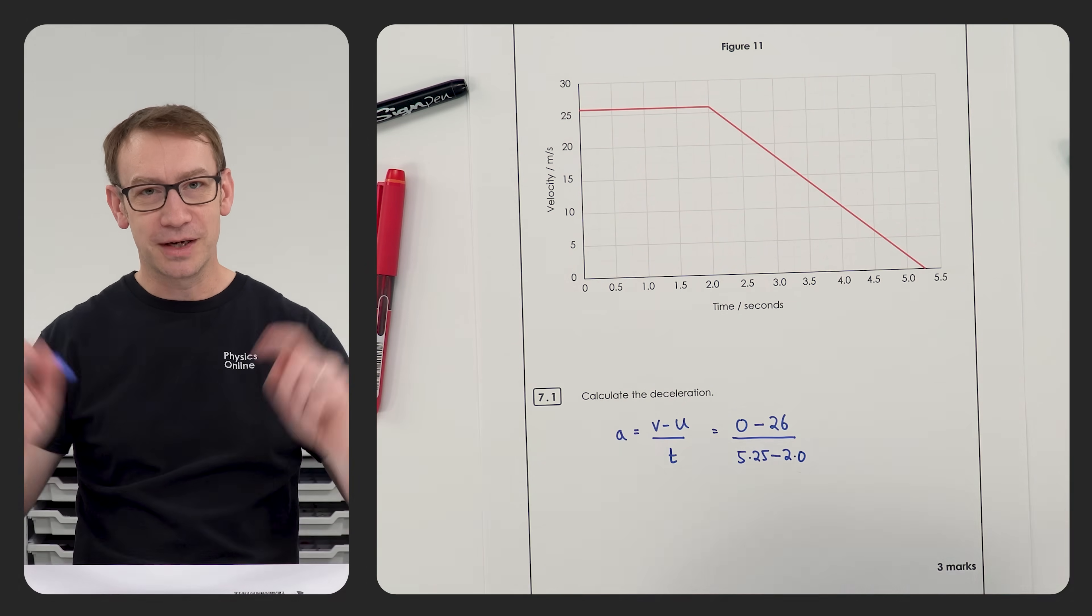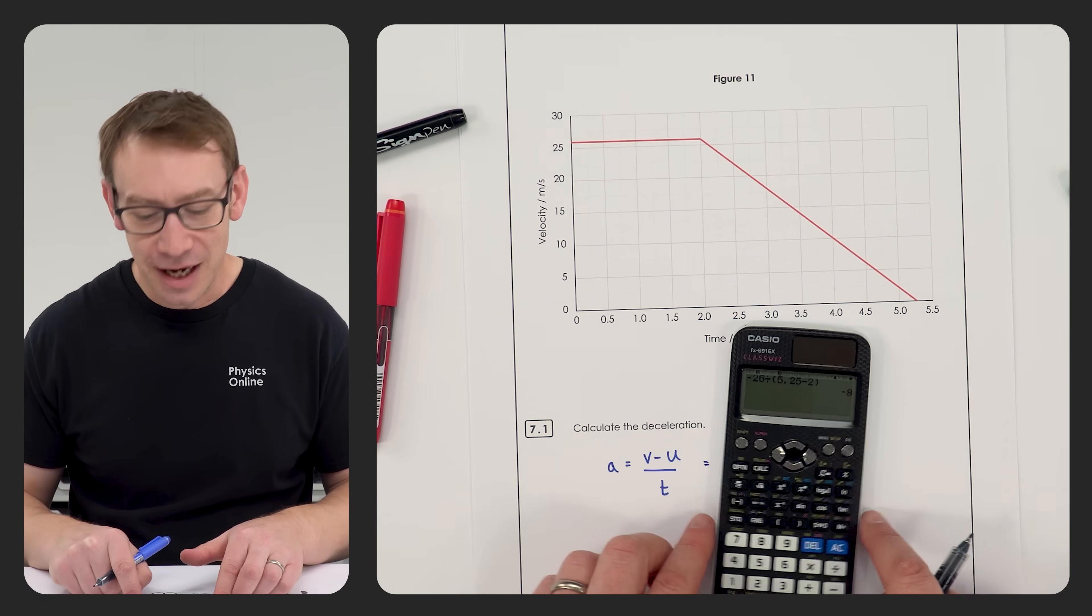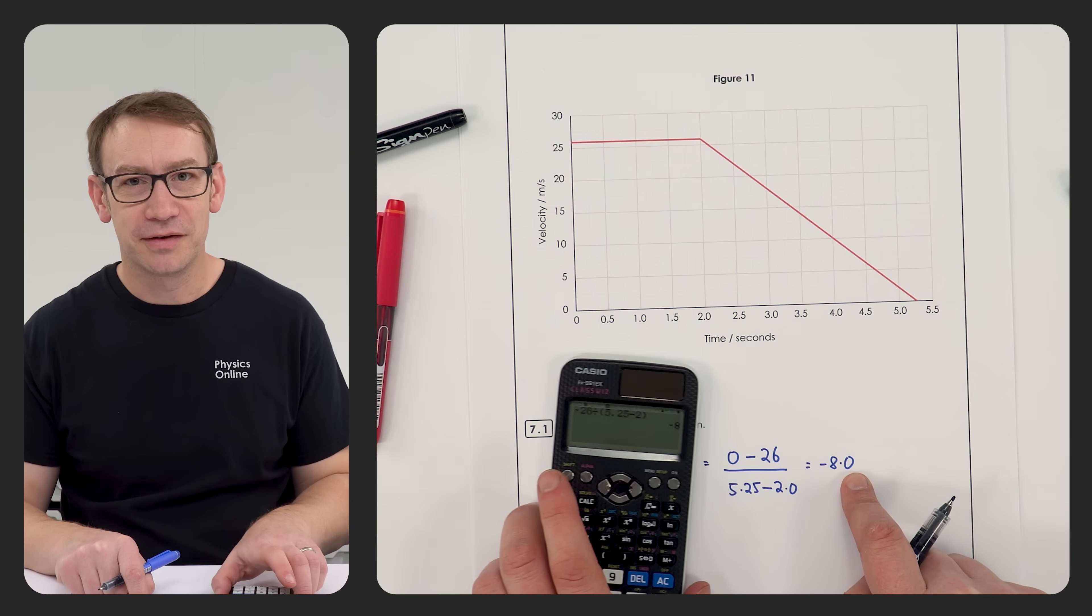Of course you can then just put the numbers straight into your calculator and that's equal to minus 8, so minus 8.0 is the deceleration.